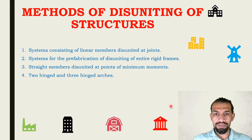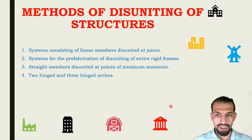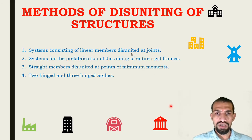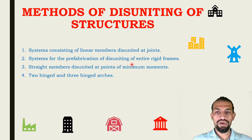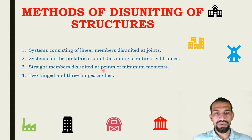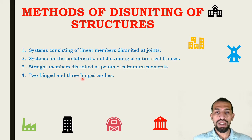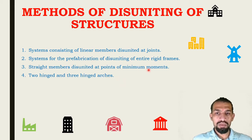There are four types of methods. Method number one: systems consisting of linear members disunited at joints, and systems for prefabrication by disuniting of entire rigid frames. Then comes straight members disunited at points of minimum moments, and then two-hinged and three-hinged arches. We already know where the moments will be coming — at nil moment locations — and two-hinged and three-hinged arches.